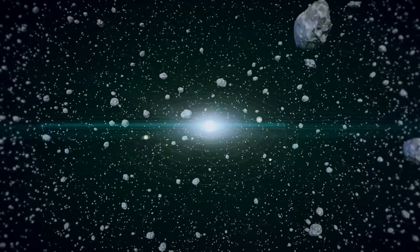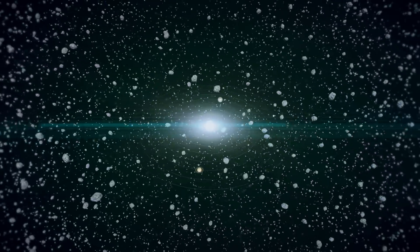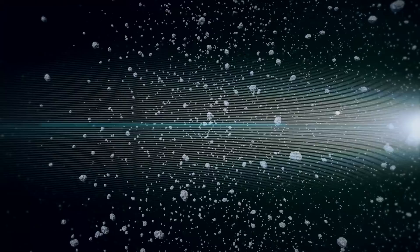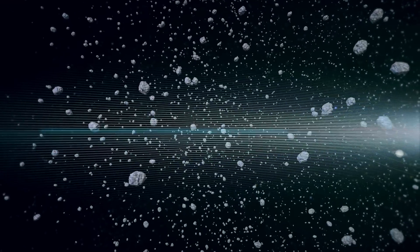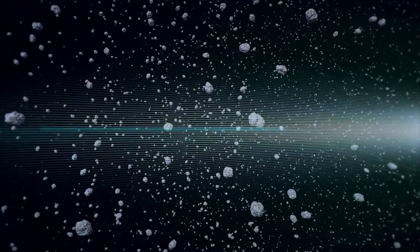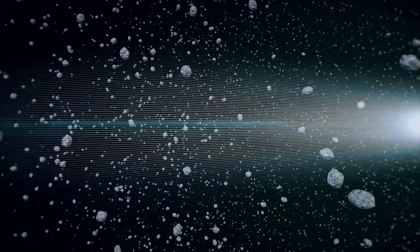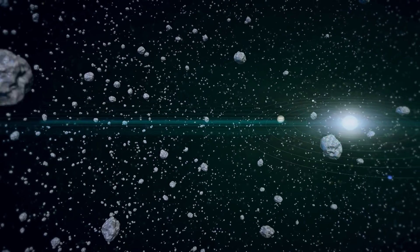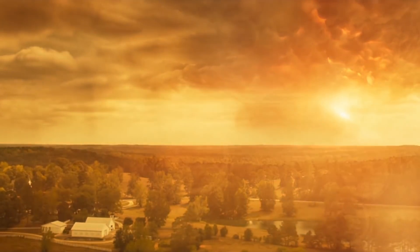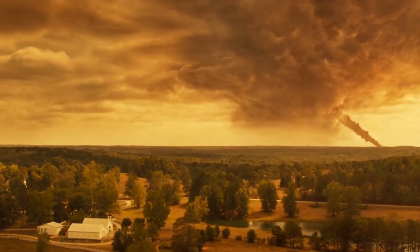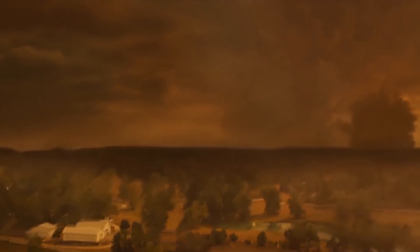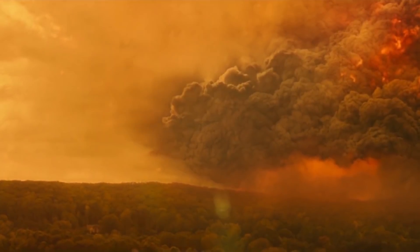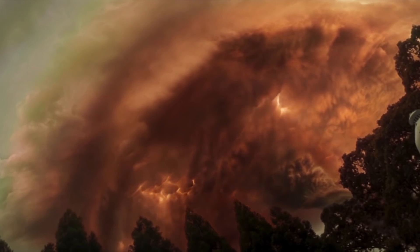Most objects in the Oort cloud move randomly at various inclinations and in a plethora of different directions. But when something disturbs the orbit of one of these icy worlds, it can get ejected from the cloud and begin the long fall towards our sun. We can't predict which or when these ginormous balls of ice will come to us from the Oort cloud.